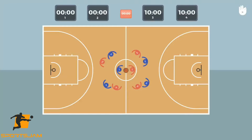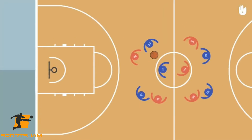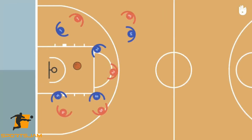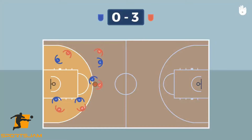The objective of both teams is to put the ball through the opponent's hoop to score as many points as possible. A scored shot, called a field goal, is worth two points, or three if the player throws the ball from outside the three-point arc.